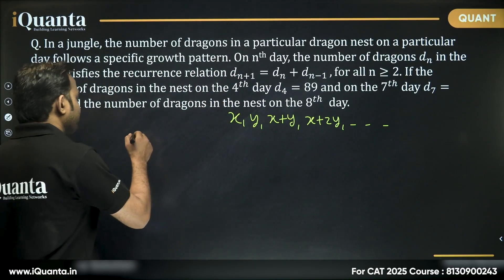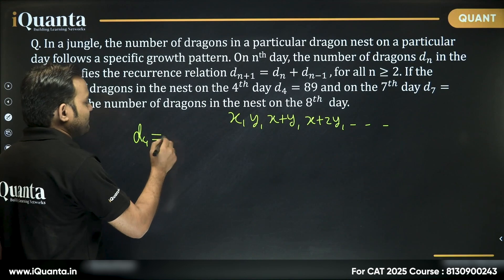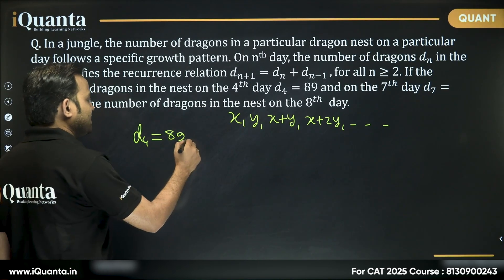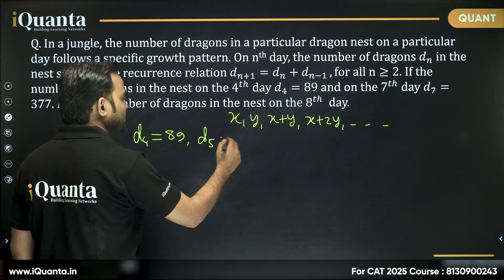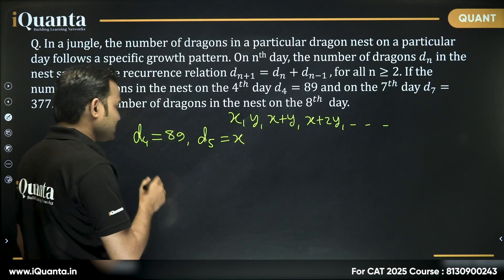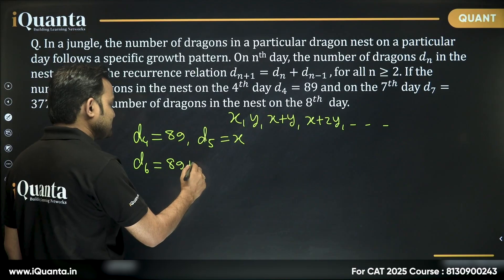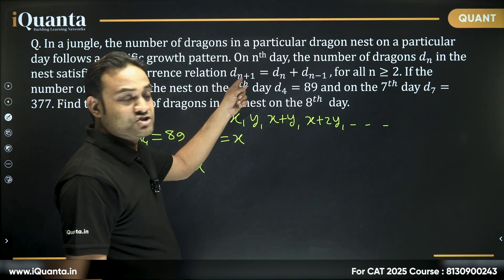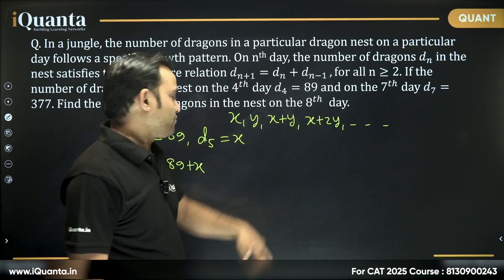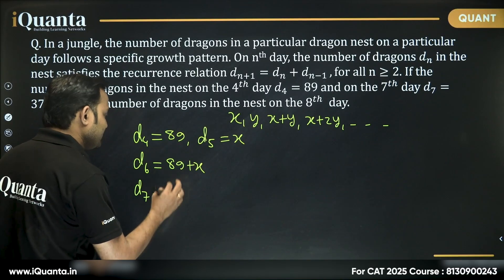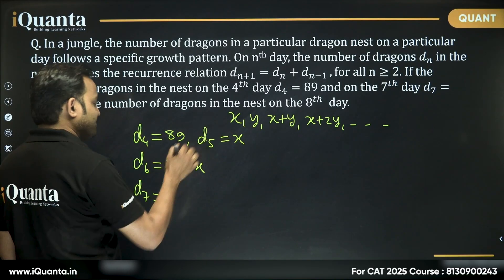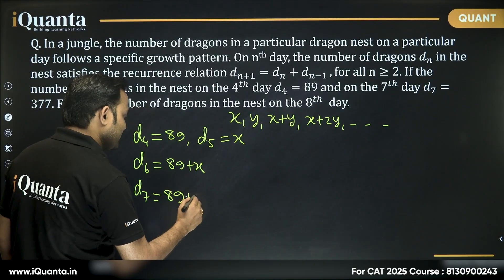Why? What we can do, on d4, it's given, that is 89, right? On d5, we can assume that it's x. Can I say on d6, number of dragons will be 89 plus x, d6 is d5 plus d4. On d7, it will be d6 plus d5, which is 89 plus 2x.